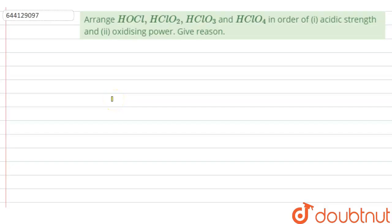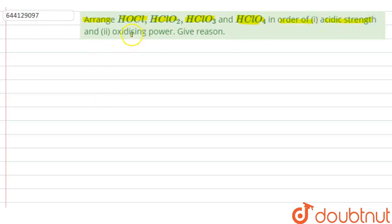Hello everyone, let us solve this question. The question says: arrange HOCl, HOClO₂, HOClO₃ and HOClO₄ in order of acidic strength and oxidizing power. Give reason.